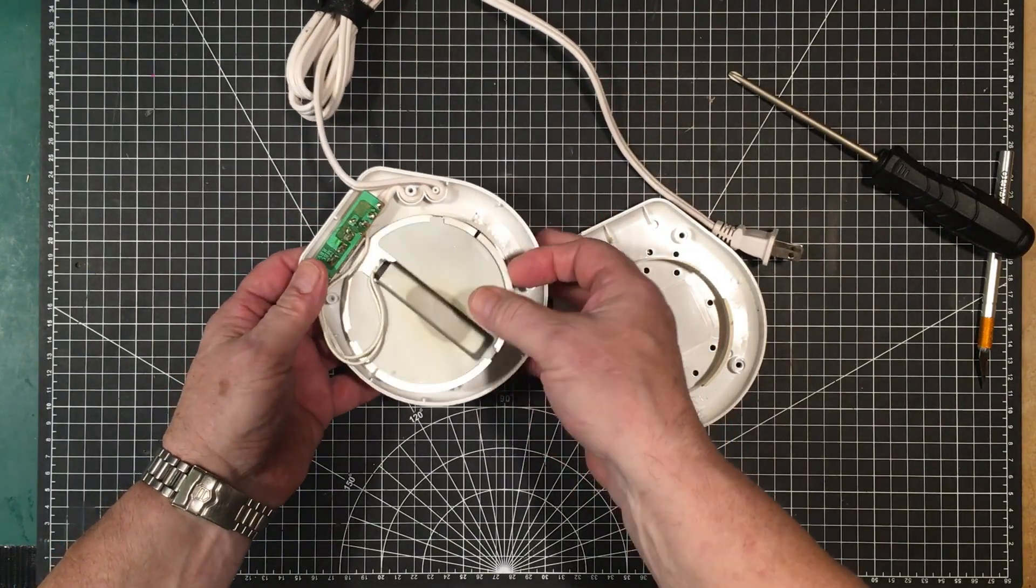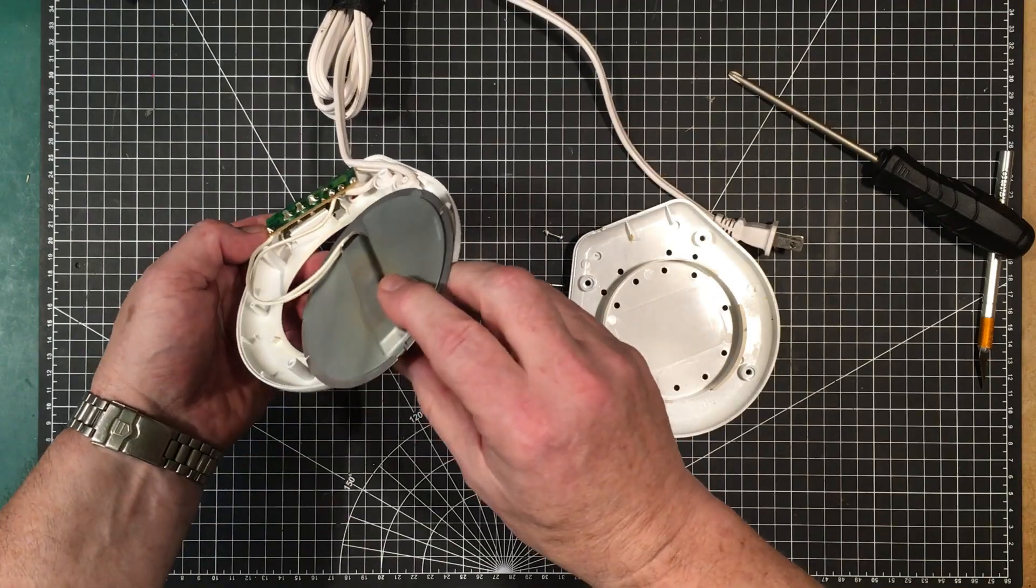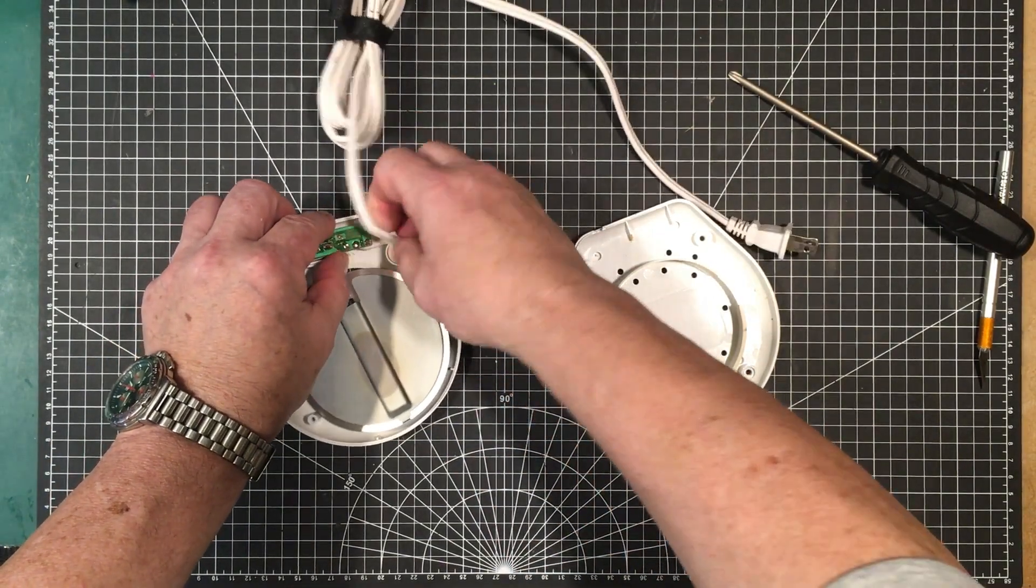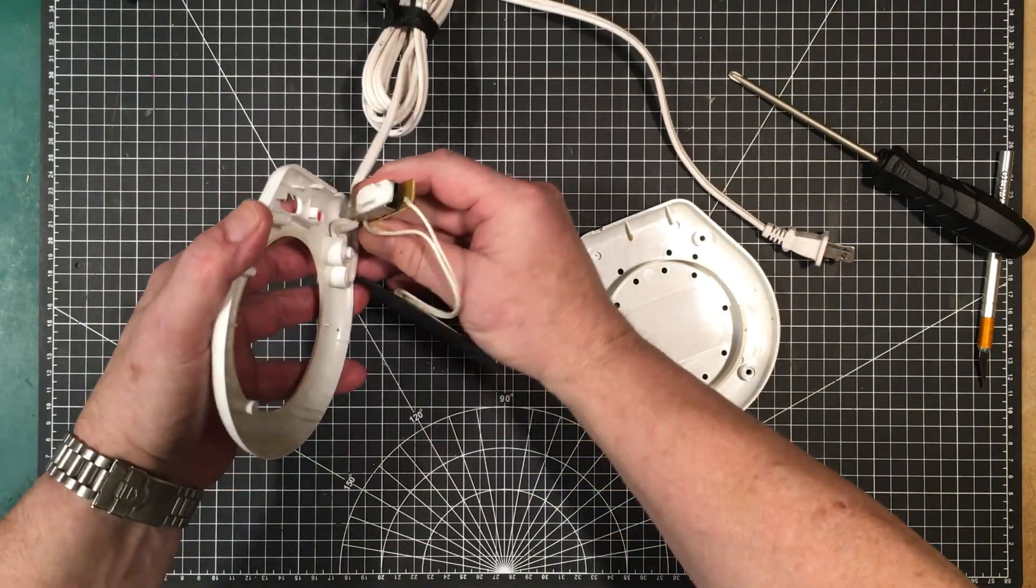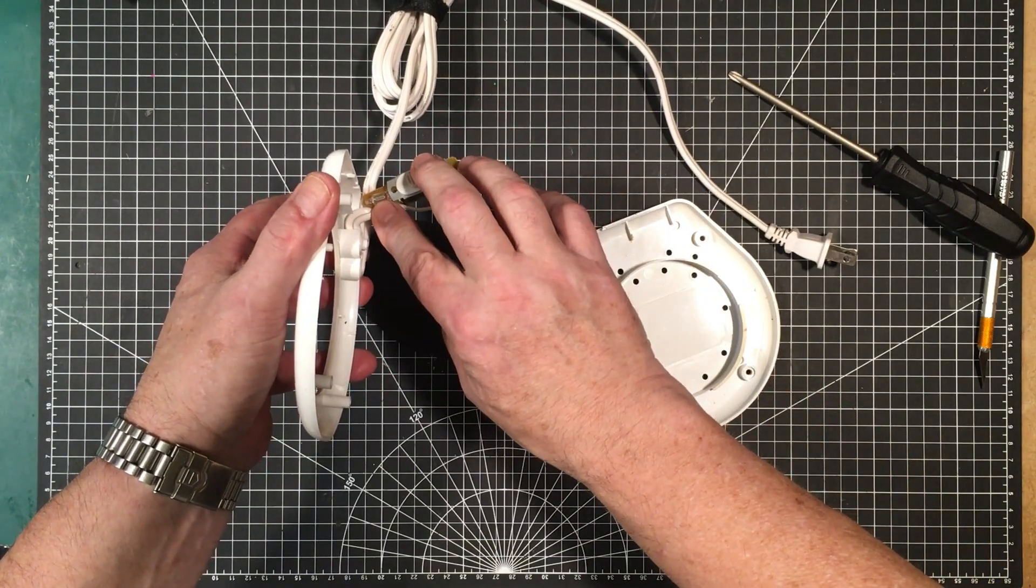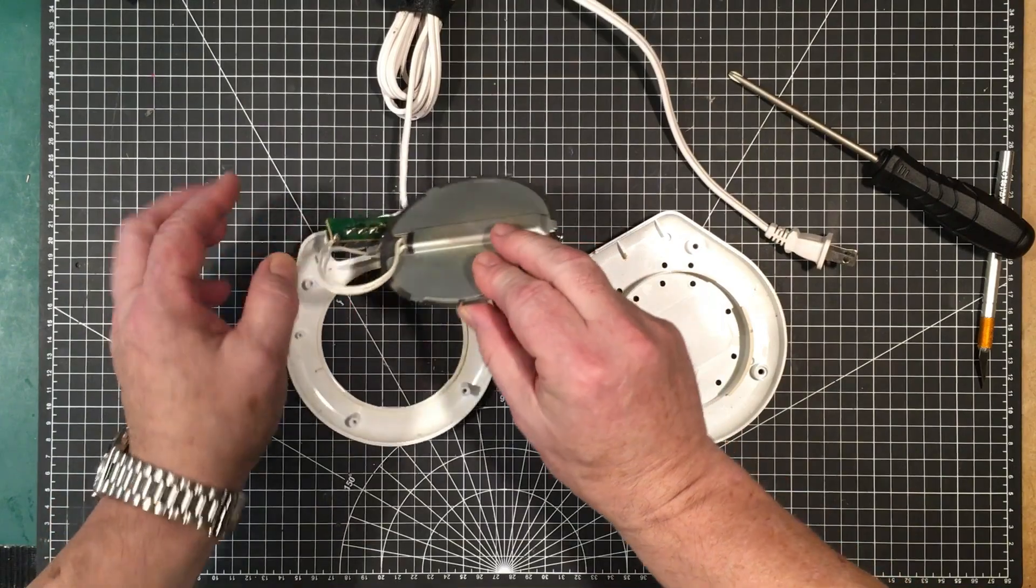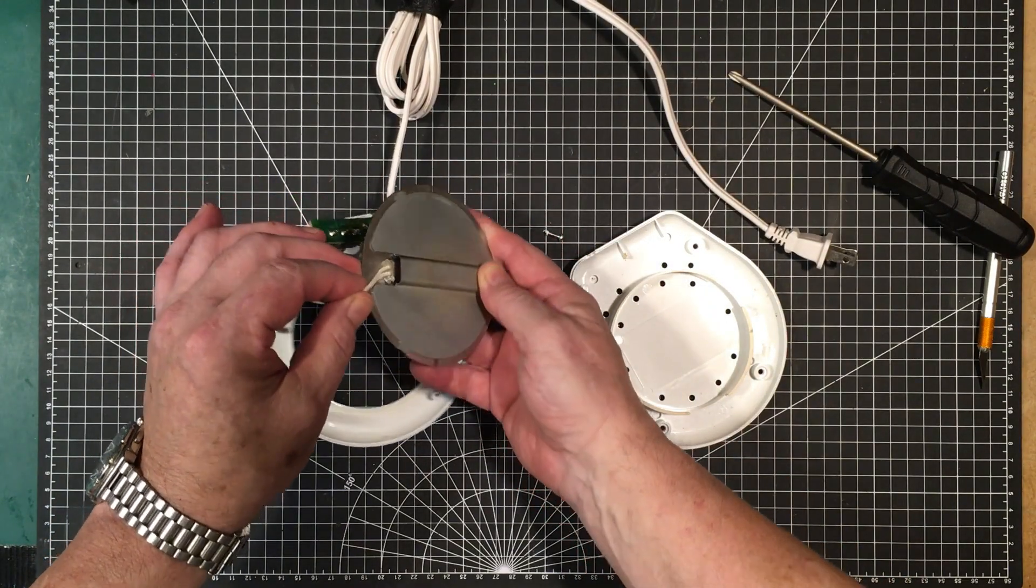So you have the plate and the switchboard switchboard is just a switch and look at that a neon light. You don't see those much anymore and there's no way to get into that. See what's in there.